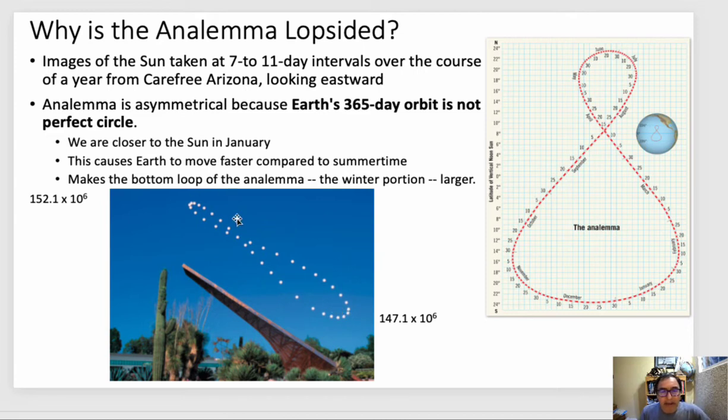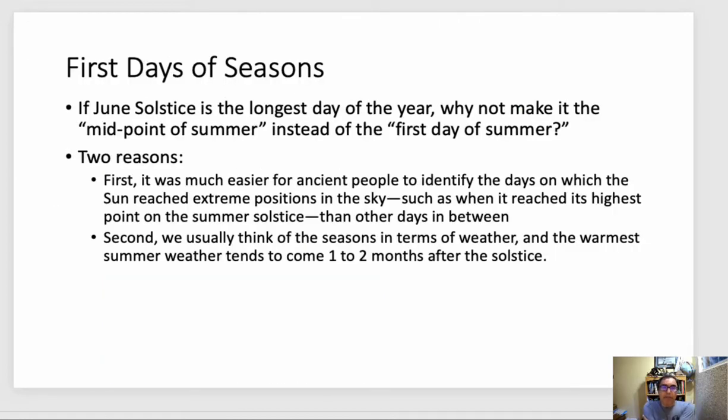And so why is the analemma asymmetrical? Why is this loop larger? So we saw earlier that in the winter, we're actually a little bit closer to the sun, which actually speeds the earth up a little faster around the sun. And then that gives us this kind of asymmetrical shape there. So it really has to do with the distance. In that case, it gives us that analemma.